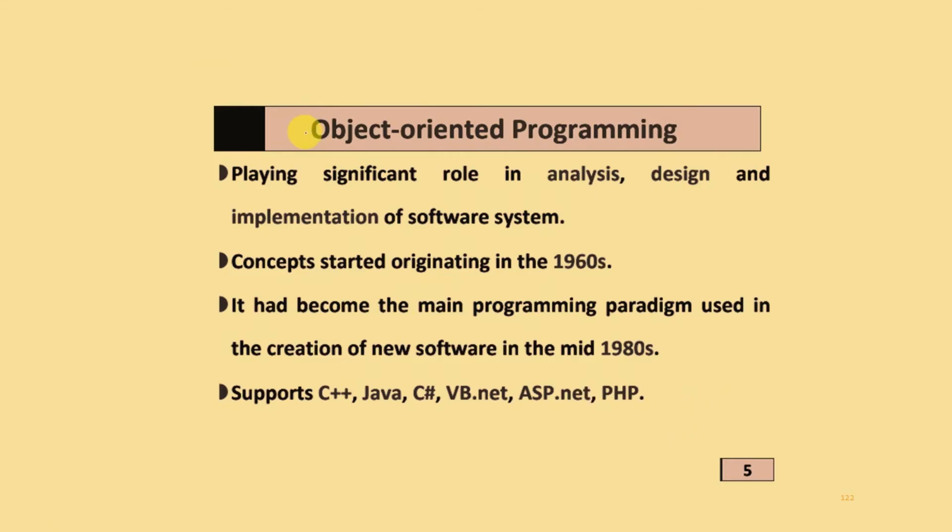In object-oriented programming, it plays a sufficient role in the analysis, design, and implementation of software systems. The concept started originally in the 1960s and became the main programming paradigm used in creation of new software in the mid-1980s.